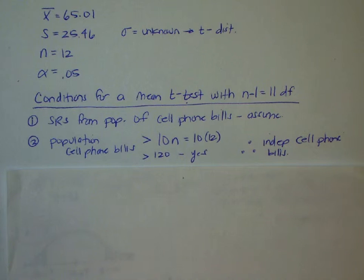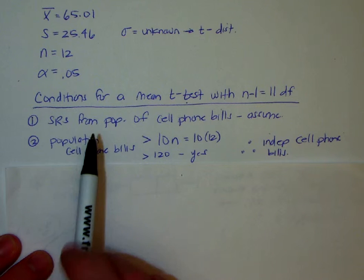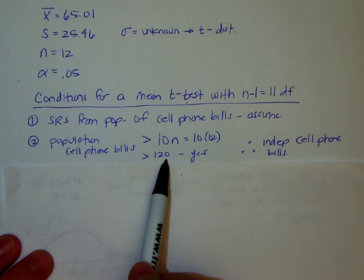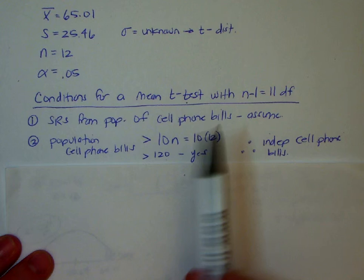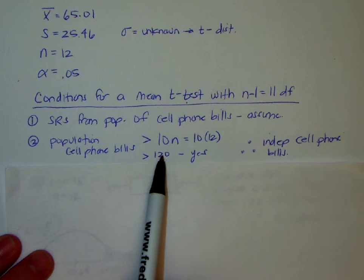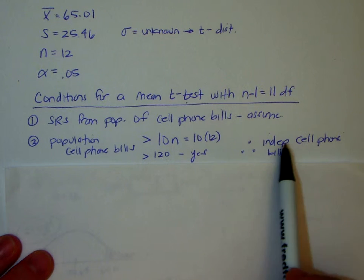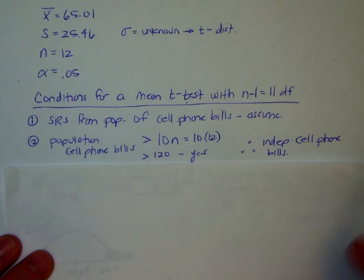So I ended that last video, cut me off at the second condition, so let's see how this goes. We ended right here where we were checking is the population cell phone bills greater than 10 times N. I would imagine that, yes, there are definitely more than 120 cell phone bills in the world. So these two conditions come together and we have independent cell phone bills.